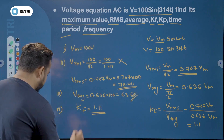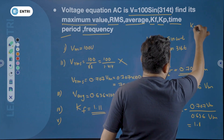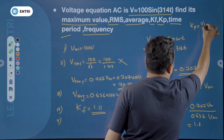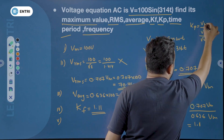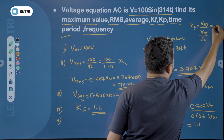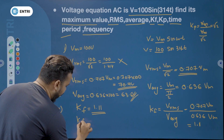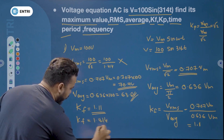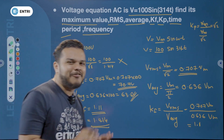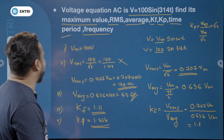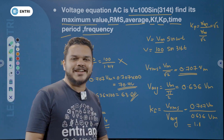Peak factor equation: peak factor equals maximum value divided by RMS value. RMS value is VM divided by root 2. So root 2 is the denominator, making the peak factor value equal to 1.414.